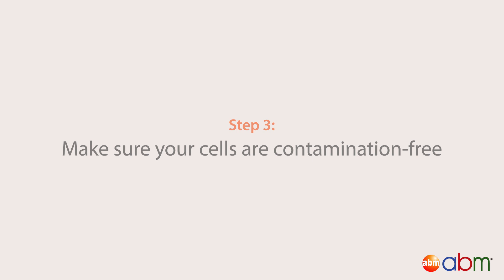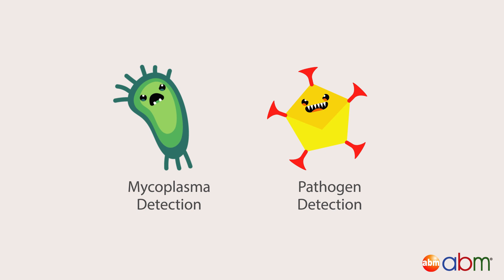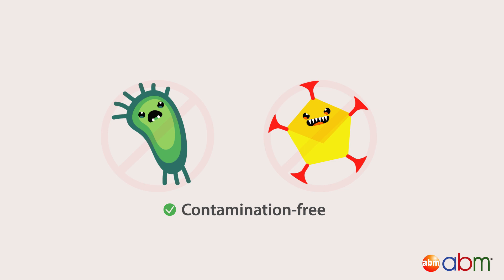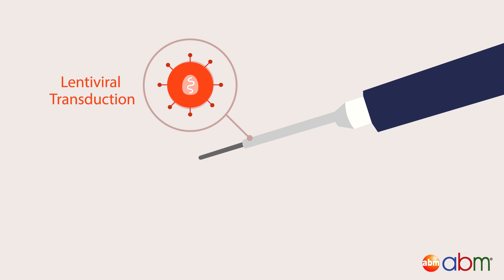Before performing your immortalization, make sure your primary cells are contamination-free. Standard tests consist of mycoplasma and pathogen detection. ABM offers the necessary products and services. Once you confirm your cells are contamination-free, insert your immortalization reagent through a lentiviral transduction or a plasmid transfection.